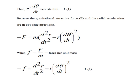Let's say this constant is equal to h. This is equation number 1. Because the gravitational attractive force and the radial acceleration are in opposite directions, as given in slide number 4, minus f is equal to the mass times the radial acceleration. Then we can write an equation for the force per unit mass — that is equation number 2.